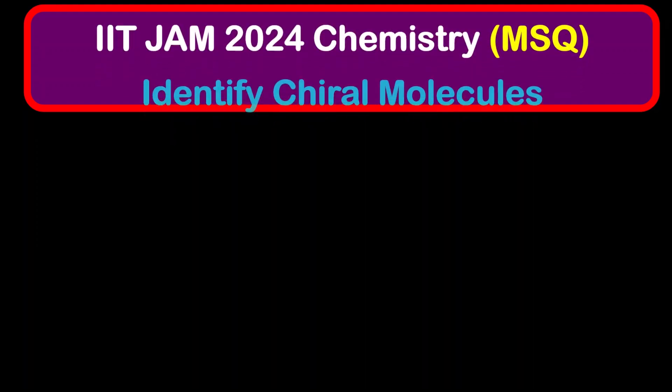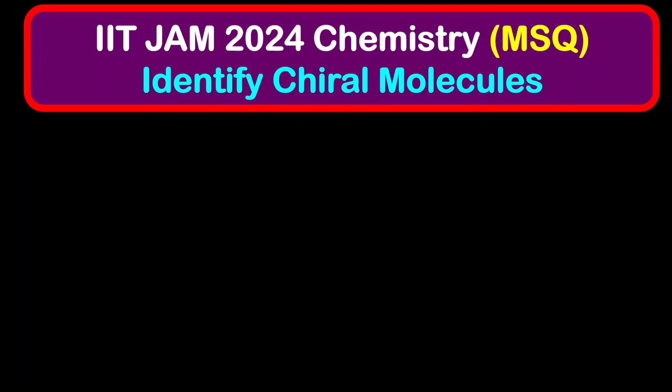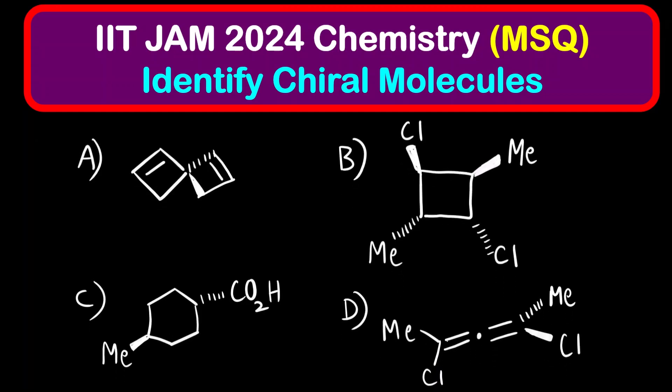Hello everyone, welcome to Chemazon Complete Chemistry. In this video we are going to solve another question from the MSQ section, that is multiple select question. The question is: we have to identify which molecule or molecules are chiral. These are the four options that are given.